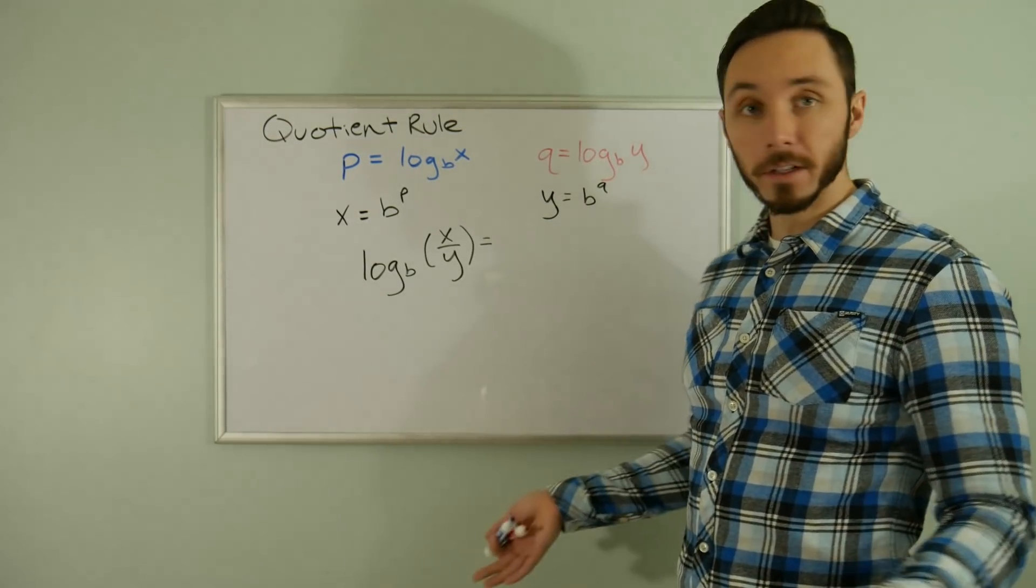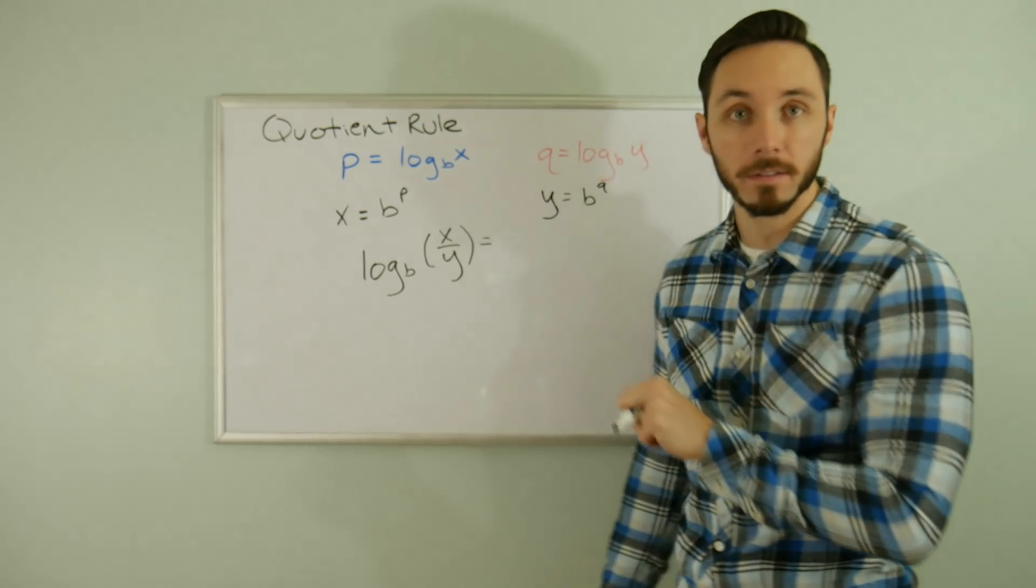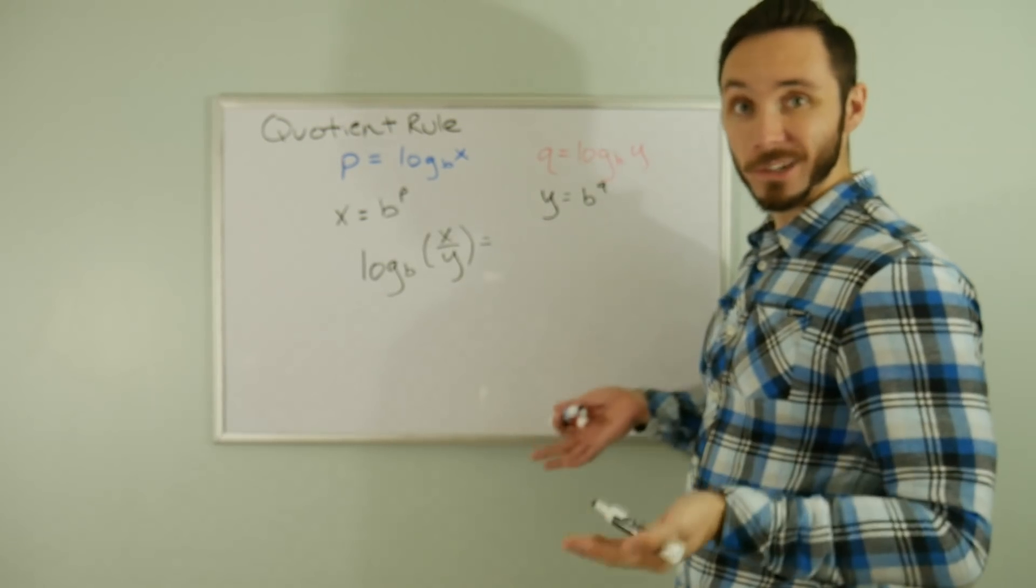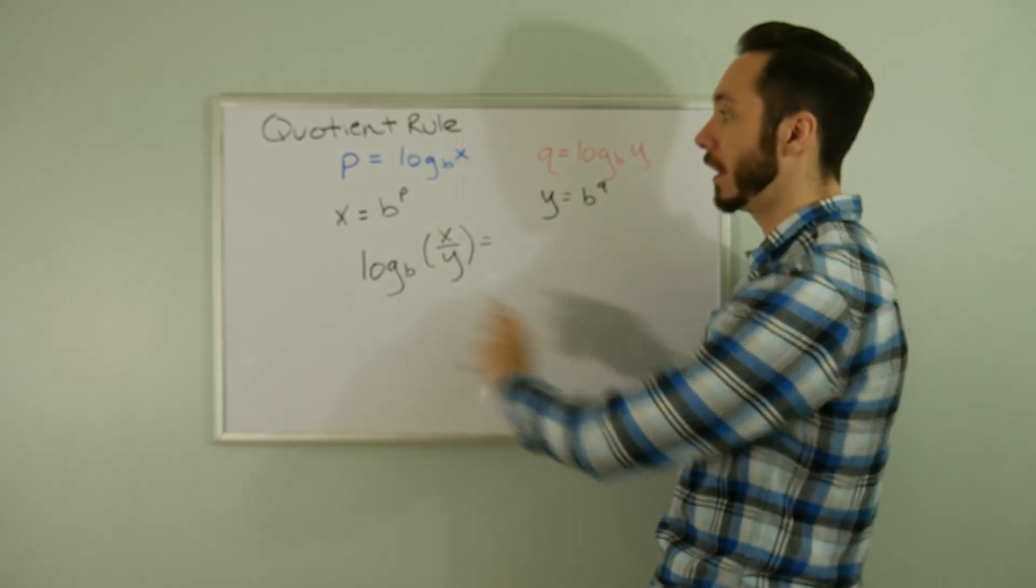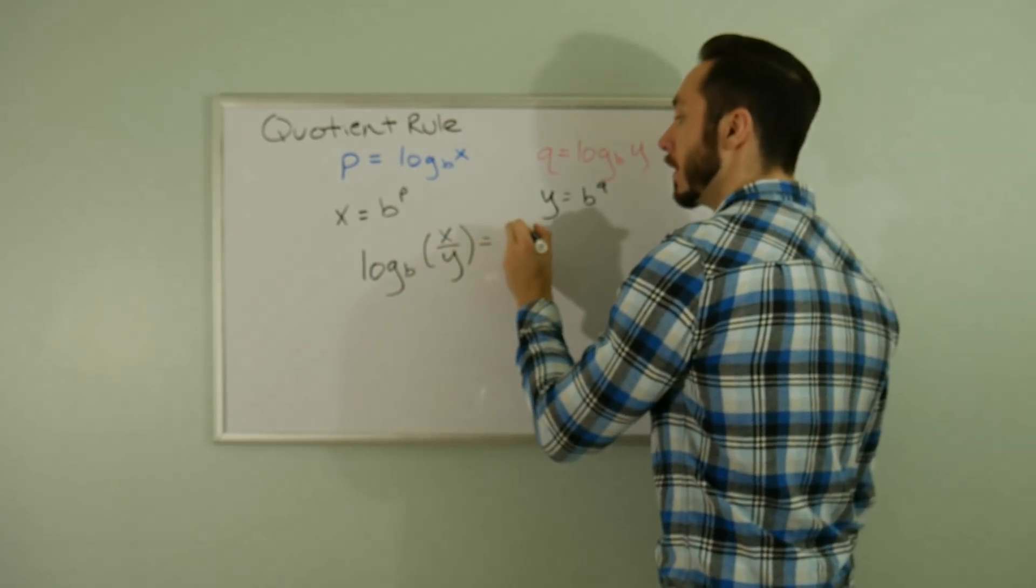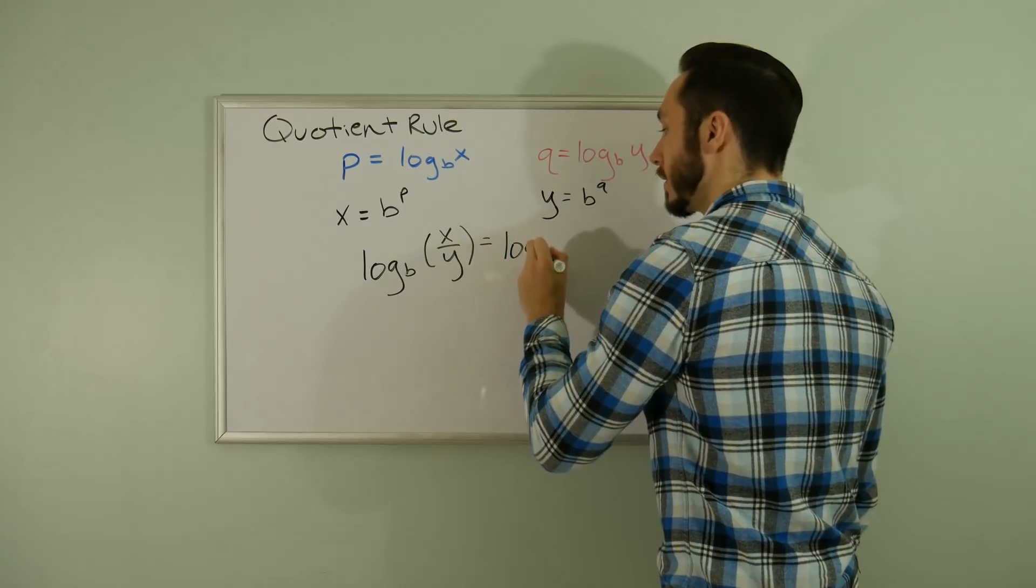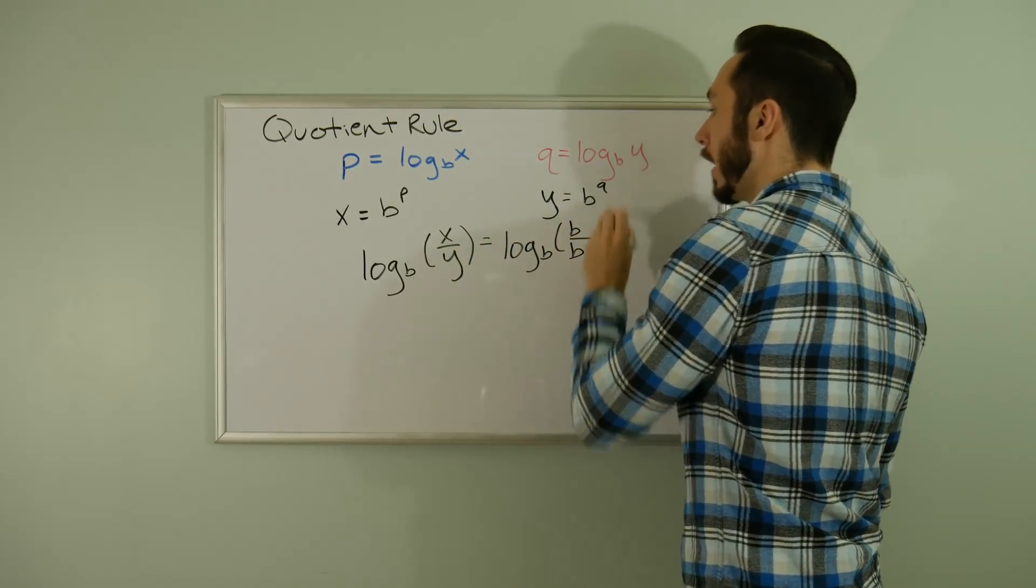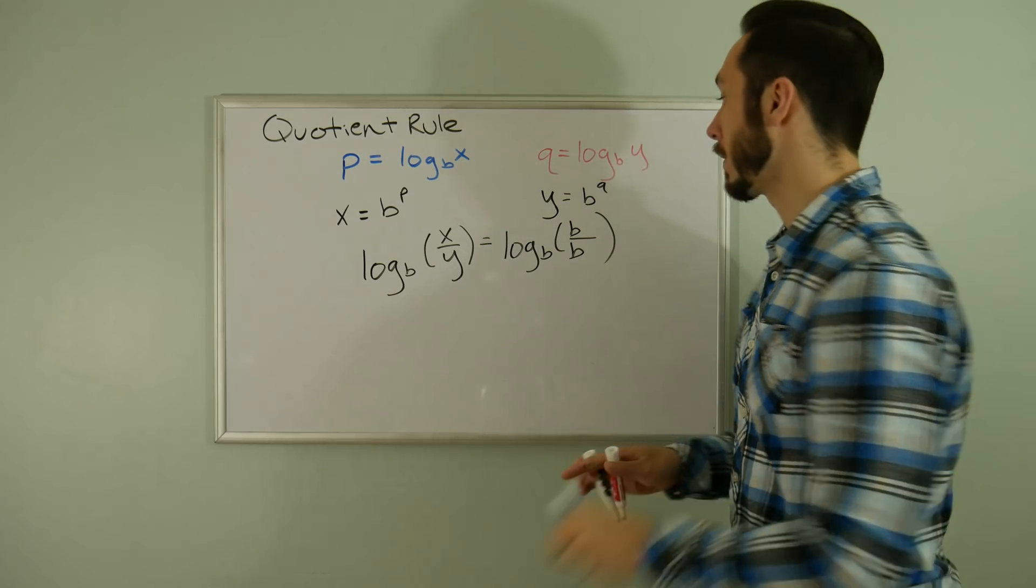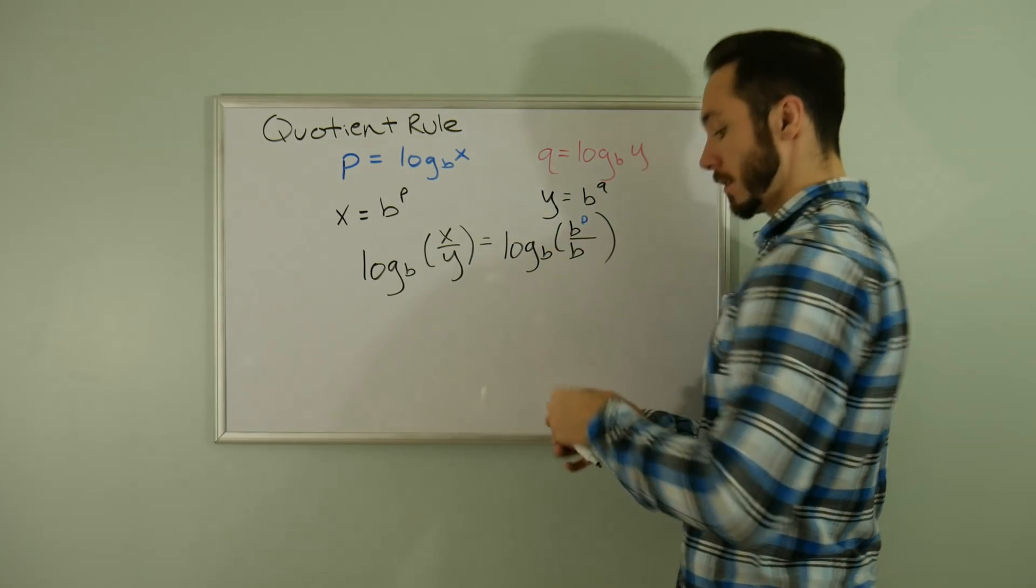Quotient rule is essentially the same proof as the product rule, except we're dividing X and Y instead of multiplying them. The setup is identical. Here we have log base B of X over Y. I know X = B^P and Y = B^Q, so I'm going to plug those in.